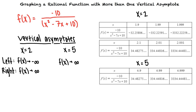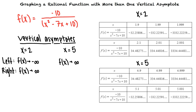Next we evaluate f of x for some values of x greater than 5 but getting close to 5. We see that as x approaches 5 from the right, f of x decreases without bound. This means that f of x approaches negative infinity as x approaches 5 from the right. Based on this information, we know what the graph of f looks like for x values near the vertical asymptotes.